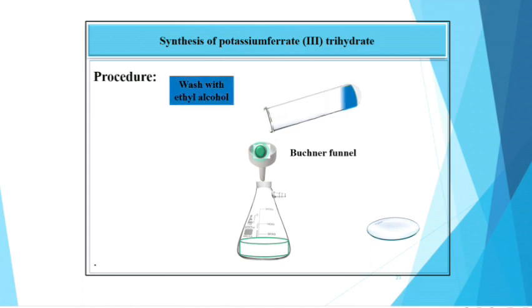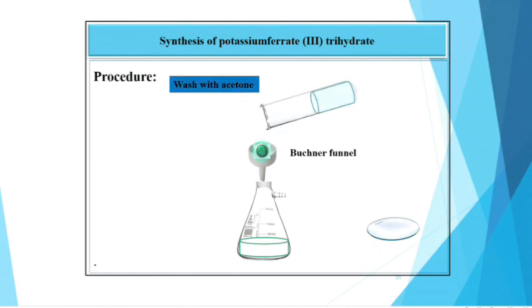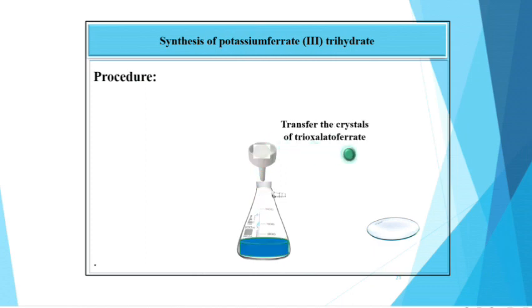Filter the bright green color crystals of trioxalato ferrate by using Buchner funnel. Then, wash it with ethyl alcohol. Finally, wash it with acetone. Then, transfer the crystals of trioxalato ferrate on watch glass.